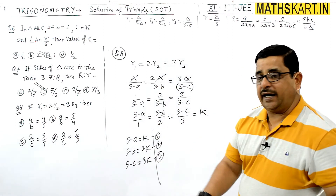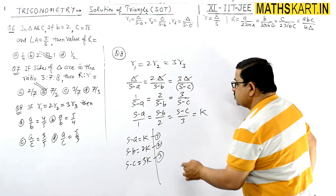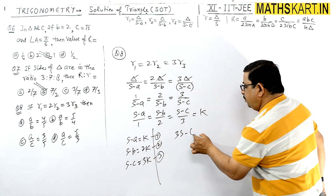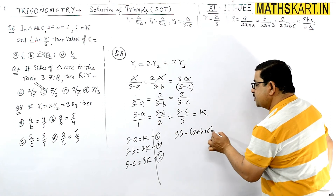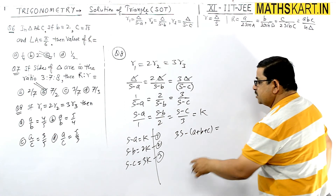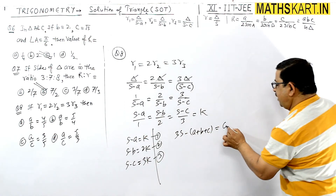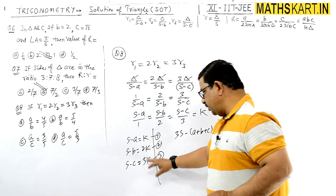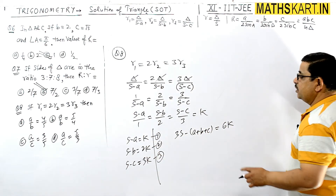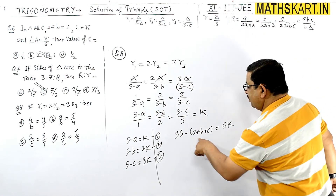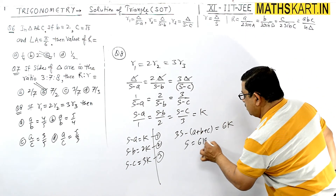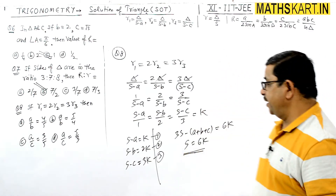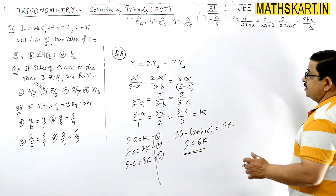Adding all three: (s-a) + (s-b) + (s-c) = 3s - (a+b+c) = 3s - 2s = s. So s = k + 2k + 3k = 6k, therefore s = 6k।